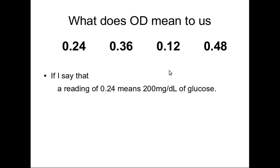If we apply Beer's law, we can say that the solution with the highest optical density has the highest concentration. We can also interpret Beer's law such that the concentration of one solution will be twice that of another, or half, or three times. We can get these kinds of relative relationships, but we still do not know the actual value of the substance.